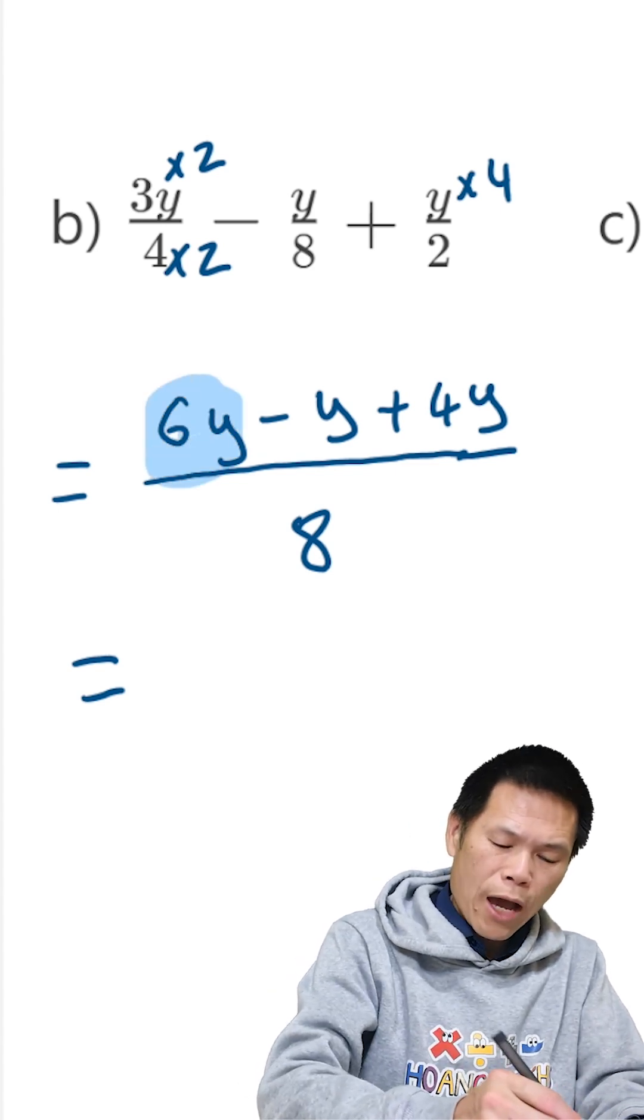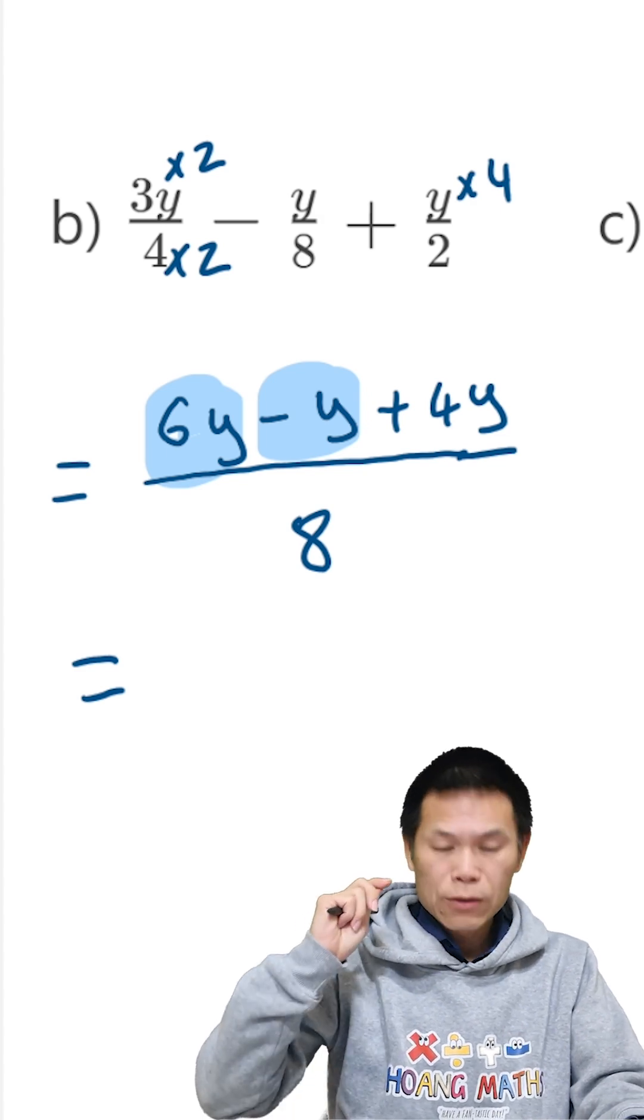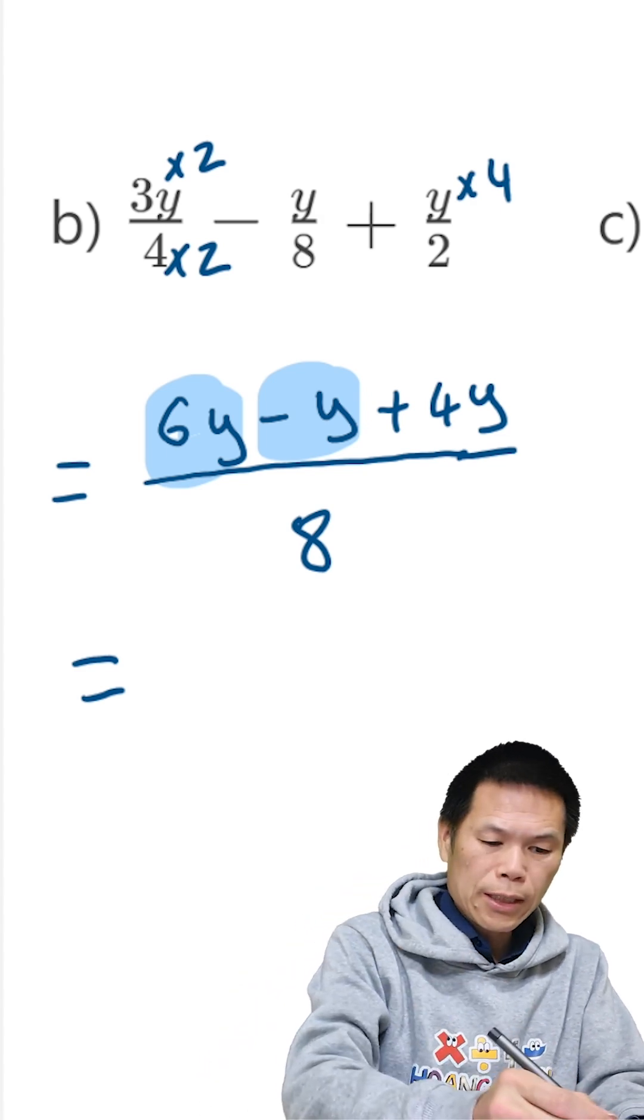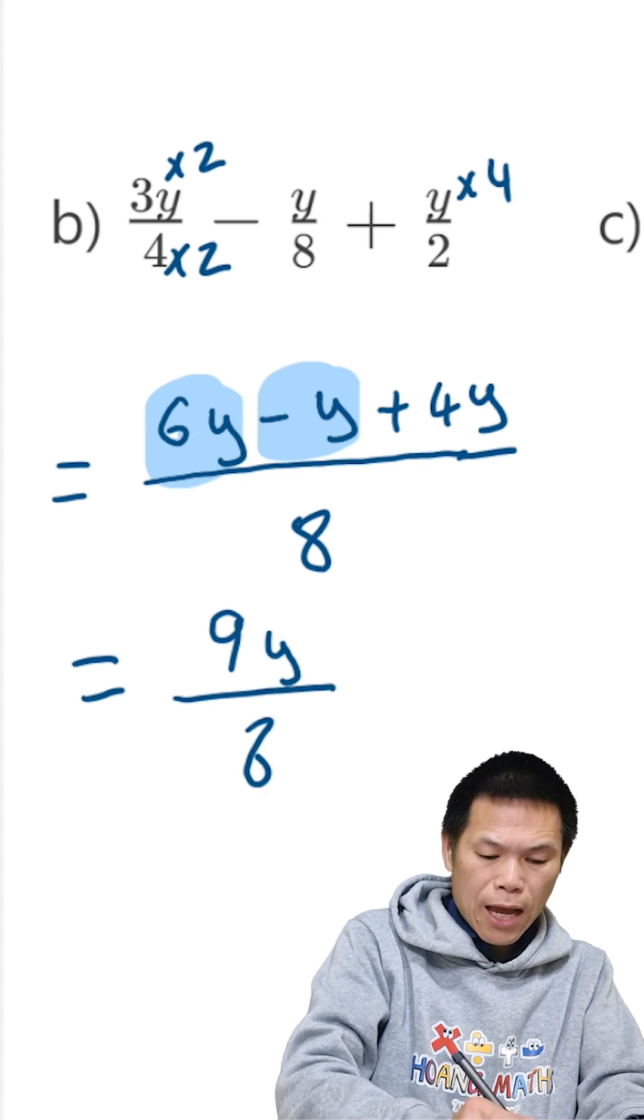So we have 6y, we minus 1y, so 6 minus 1 will give me 5, so 5 plus 4 is 9. The answer is 9y over 8.